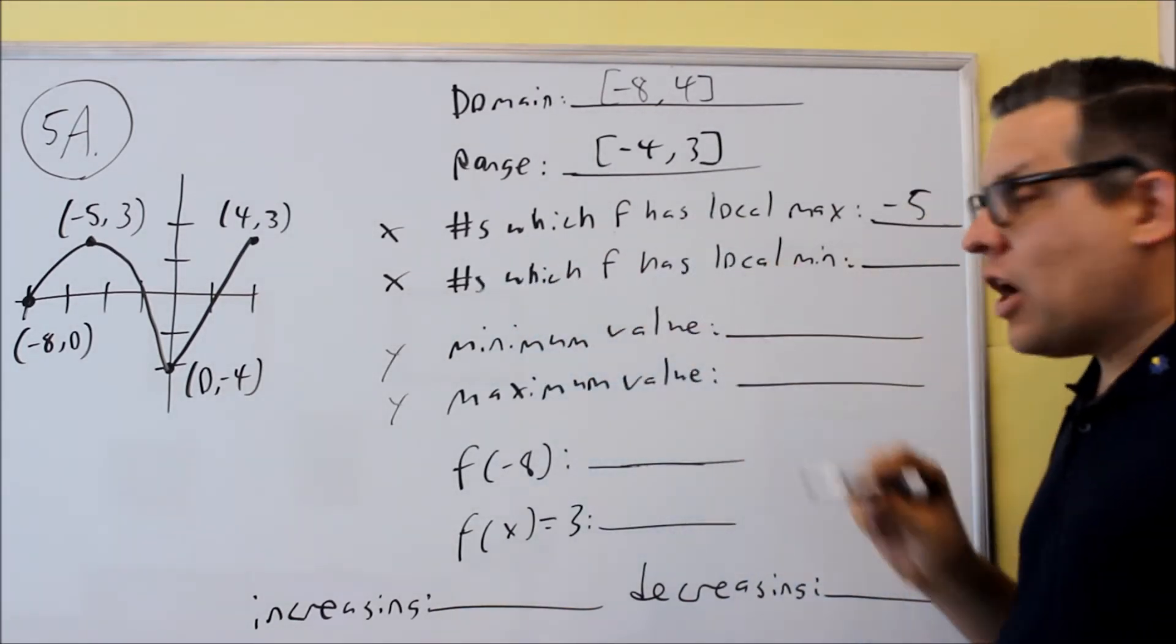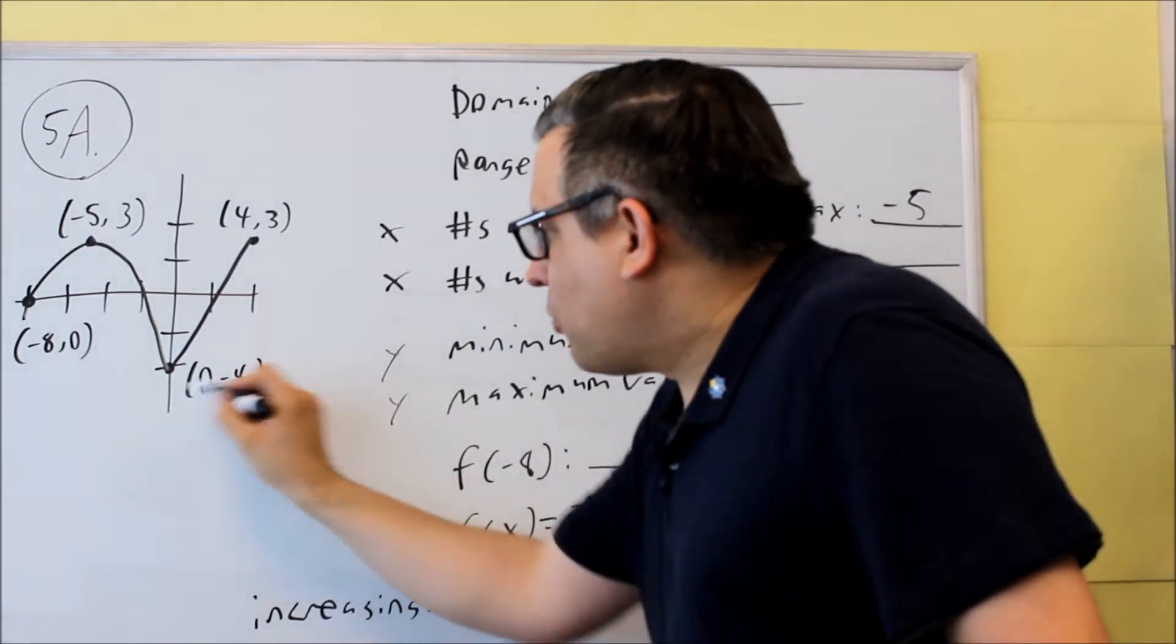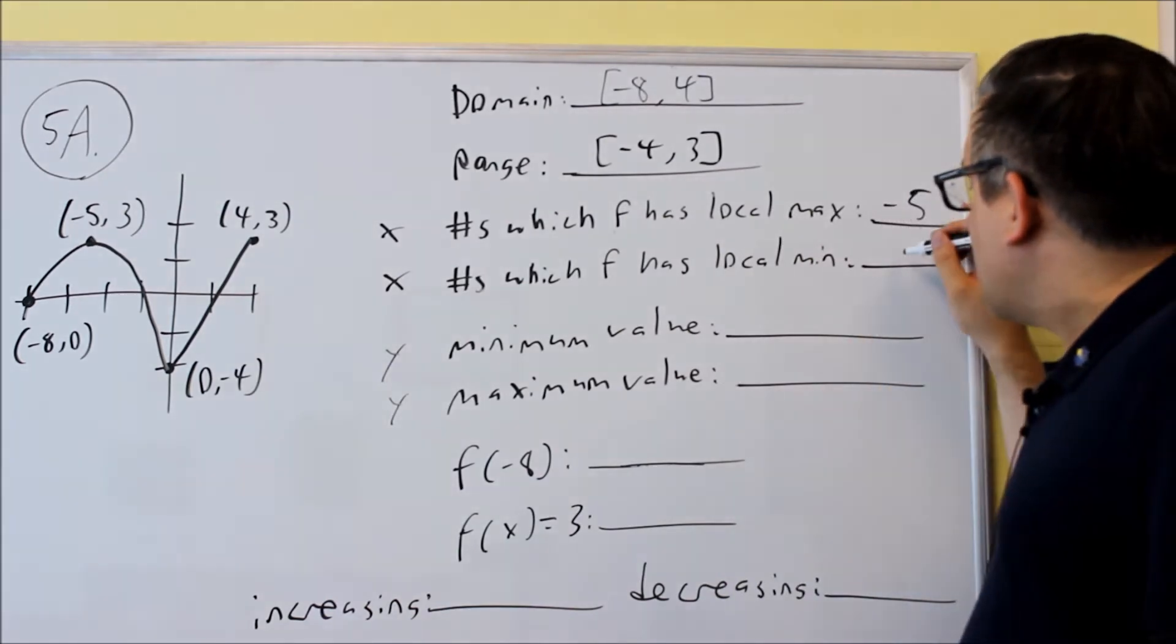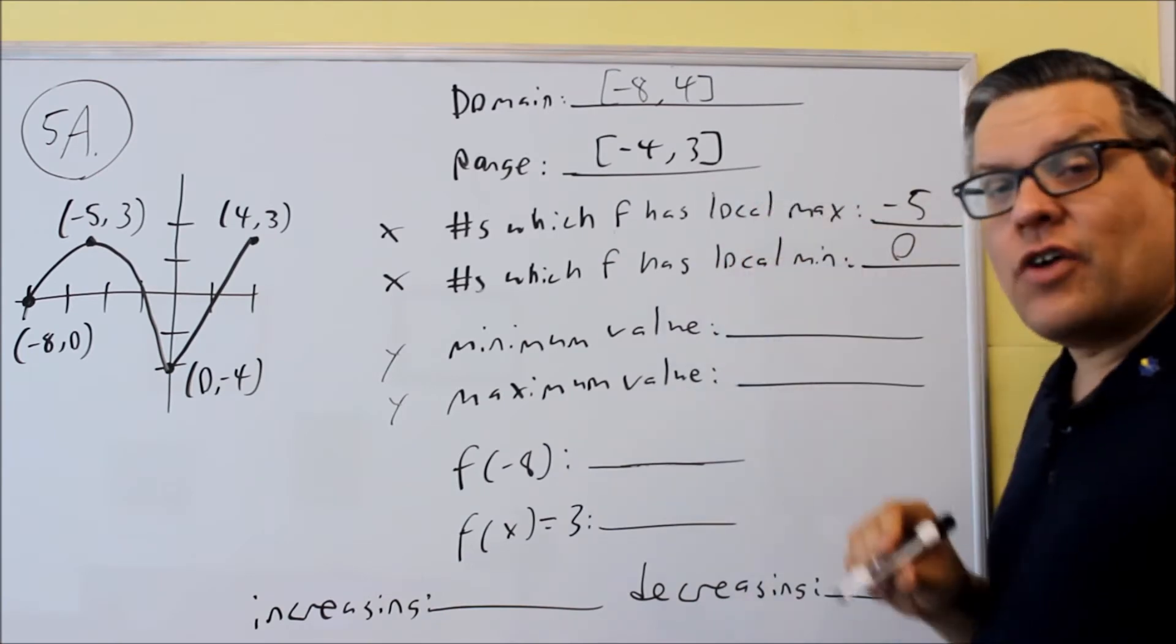This one, numbers at which f has a local min. It decreases and increases again. That's this point right there. And that one's going to be 0. You're just indicating the x value for which. So again, these are both x values.